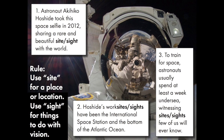Your first sentences — you can write these down or just listen. Number one: astronaut Akihiko Hoshiri took this space selfie in 2012, sharing a rare and beautiful sight with the world. Number two: Hoshiri's work sites have been the International Space Station and the bottom of the Atlantic Ocean. Number three: to train for space, astronauts usually spend at least a week undersea witnessing sites few of us will ever know. In researching this slide, that's actually true — space agencies have pods on the floor of the ocean where astronauts go to simulate the otherworldly, somewhat claustrophobic feeling they'd have in space.